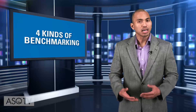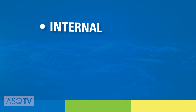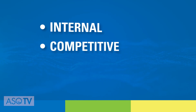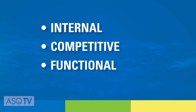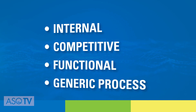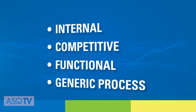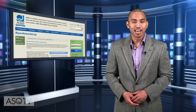There are four types of benchmarking according to Camp: internal — comparison among similar operations within your organization; competitive — comparing to what's seen as the best from direct competitors; functional — comparing methods to companies with similar processes in the same function outside of your industry; and lastly, generic process benchmarking, which compares work processes to others that are innovative and exemplary. For free resources focused on benchmarking, log on to the Learn About Quality section in the ASQ Knowledge Center at the link below.